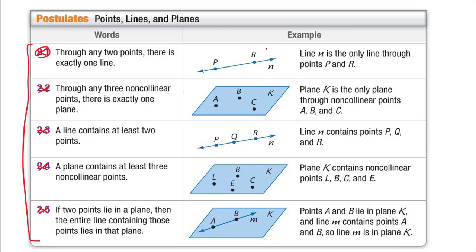Through any two points, there's exactly one line. We've kind of talked about that already. So two points make up a line. Through any three non-collinear points, there's one plane. So one plane, three non-collinear points.